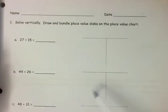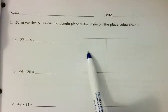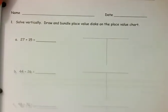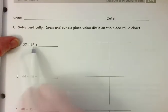In lesson eight, we have a space for them to draw and bundle those place value disks on the place value chart. So I'm going to show 27 plus 15.